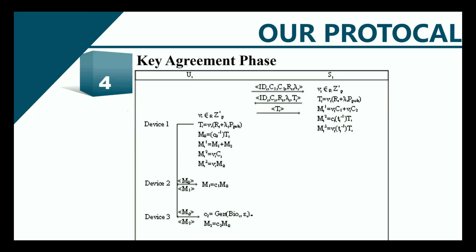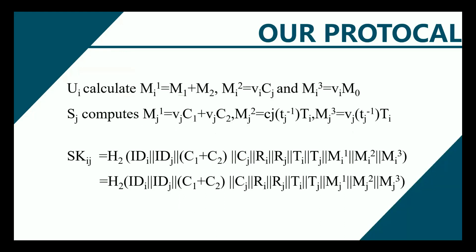After receiving M1 and M2 on mobile device 1, the server S_j computes M_j1, M_j2, and M_j3 on its device. Thus, the agreed session keys for U_i and S_j can be computed as SK_ij.